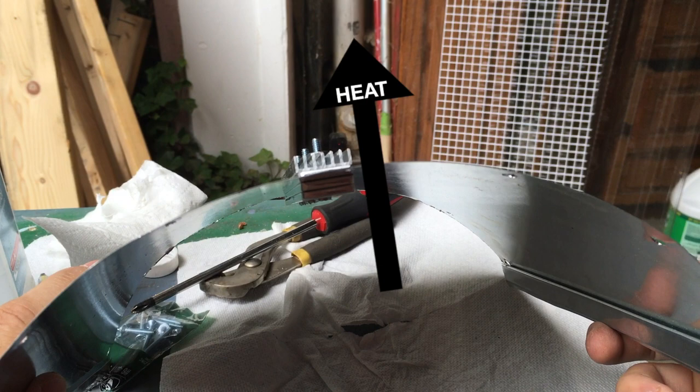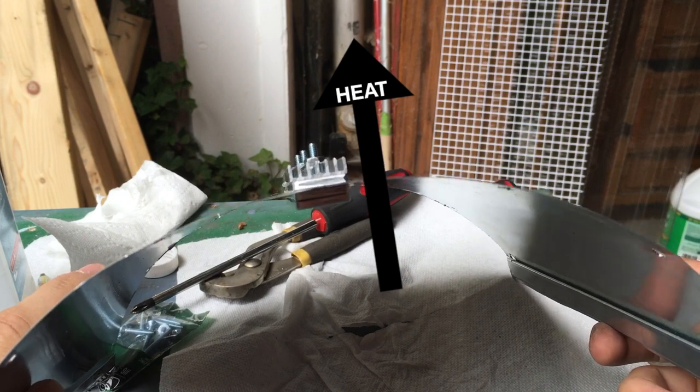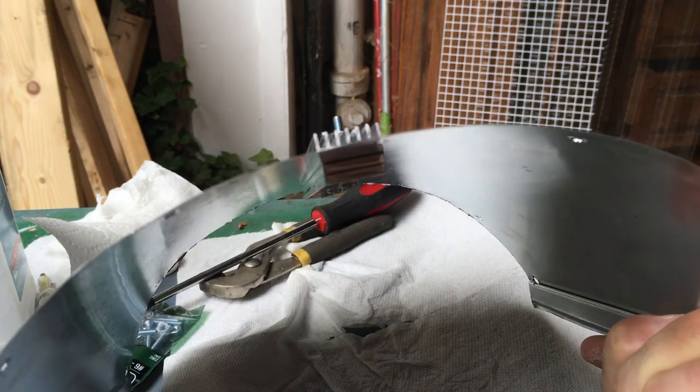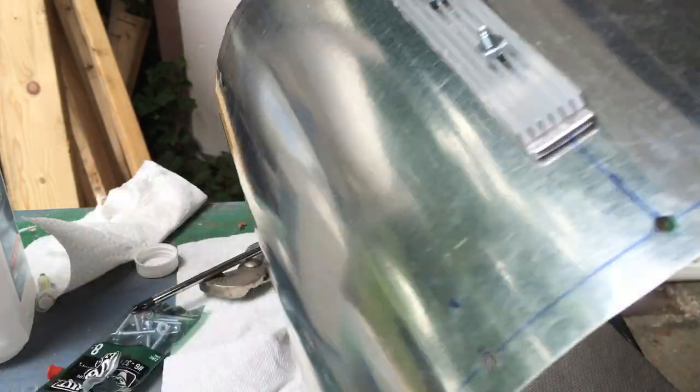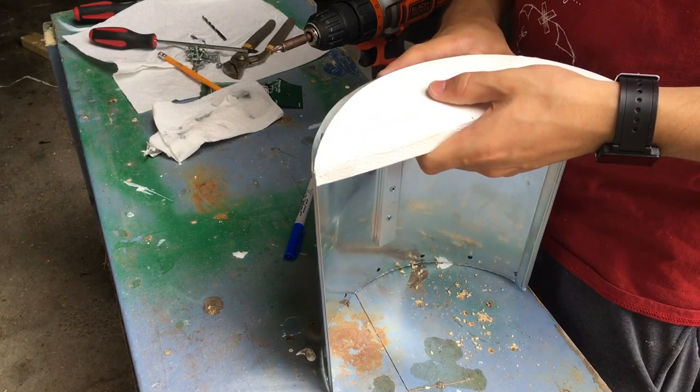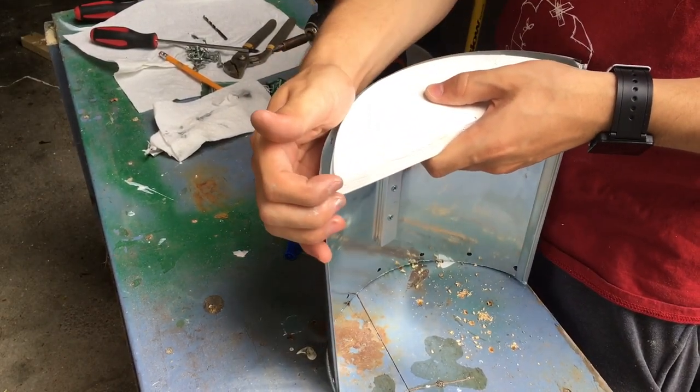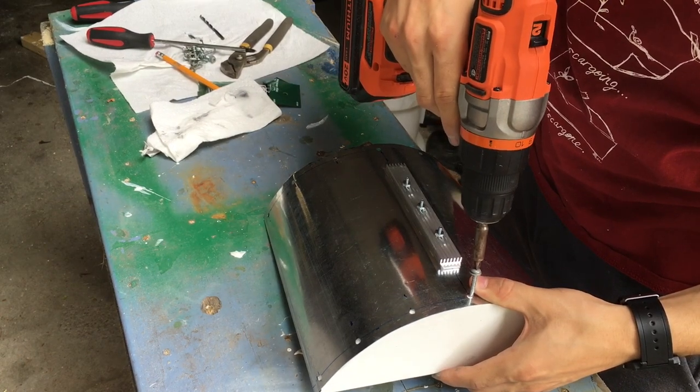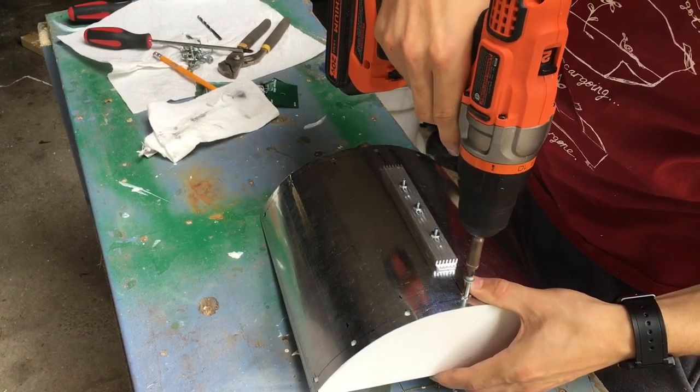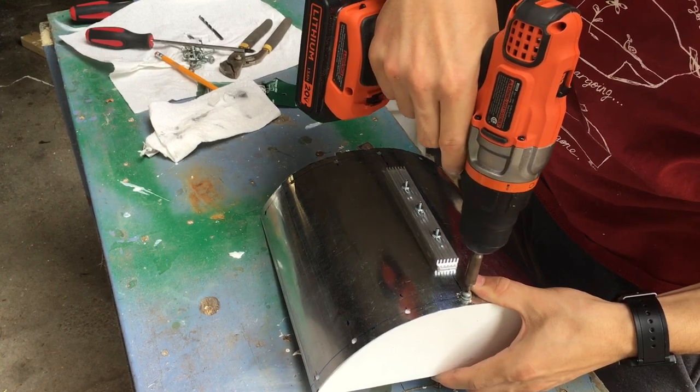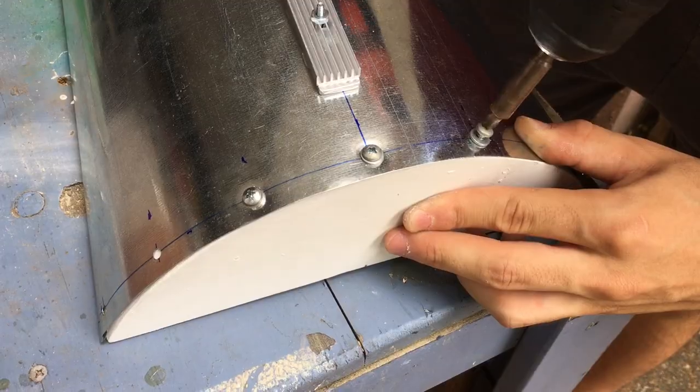The nice thing about this is that the entire lamp basically becomes one giant heat sink, which solves the big problem of heat with LEDs. Now that that was done, the only thing I had to do to complete the basic structure of the lamp was mount the two end caps, which since I already pre-drilled the holes was pretty easy to do with just some screws.